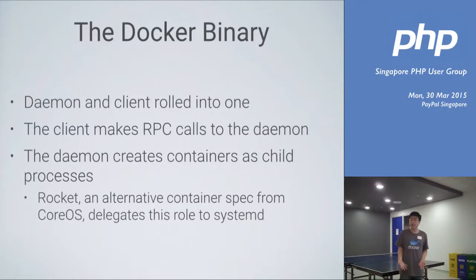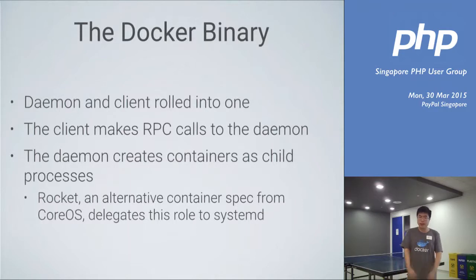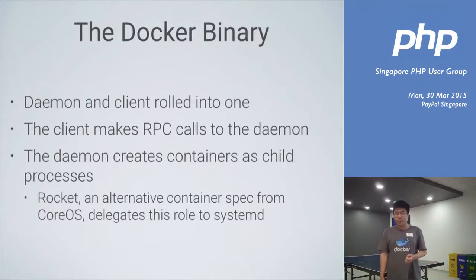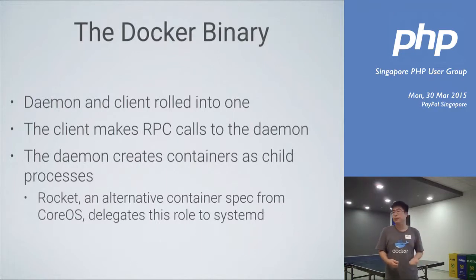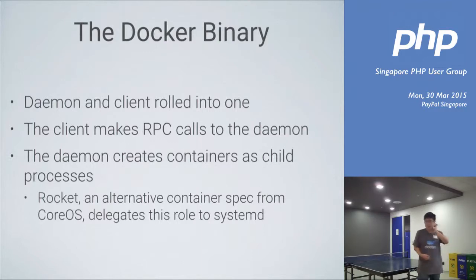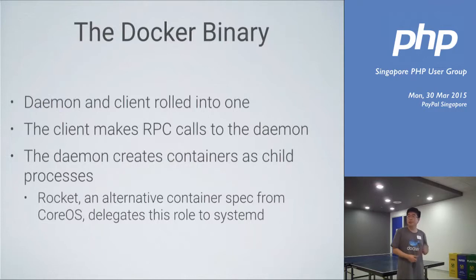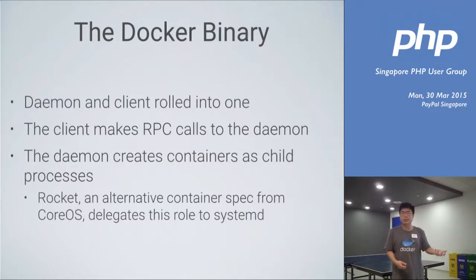When you download and install Docker, what you get is a Docker binary — a Golang compiled program. It's the daemon and the client combined into one. When you run commands using the client, it makes RPC calls to the daemon, which creates containers as child processes. There are some competing technologies, like CoreOS which created something called Rocket, an alternative container specification. They don't use the same concept — they delegate process management to the init system via systemd.